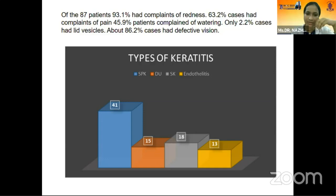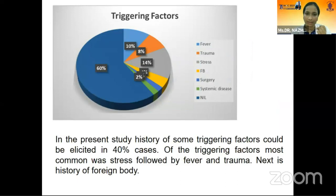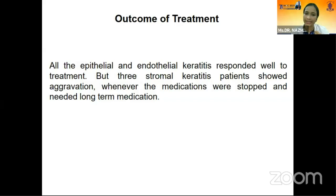Fluorescein staining revealed dendritic ulcers which were positive in 11 cases. Some triggering factors could be elicited in 40 percent of cases. The most common triggering factor was stress, followed by fever and trauma, and then history of a foreign body. Outcome of treatment showed that all epithelial and endothelial keratitis cases responded well to treatment, but three stromal keratitis patients showed aggravation whenever medication was stopped and needed long-term medication.